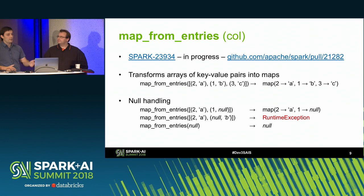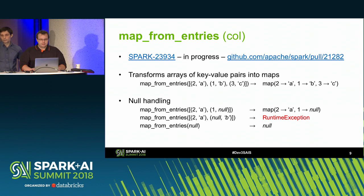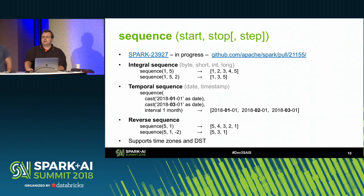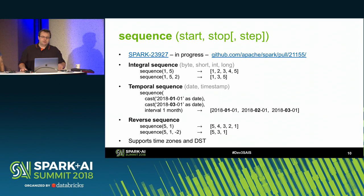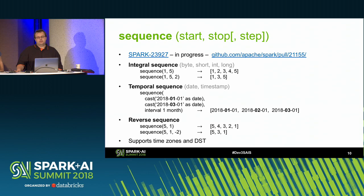I'll now ask Jan to proceed with the presentation. He will describe other functions developed by community members. My name is Jan. I'll start with the sequence function — a very simple function similar to range in Scala. You provide a start and stop parameter and it generates the sequence within that range. You can optionally specify a step parameter describing how much to step at every iteration. We support multiple types, including numeric types. If you specify start one and stop five, you get an array of one, two, three, four, five. You could also explode it to convert this into rows.